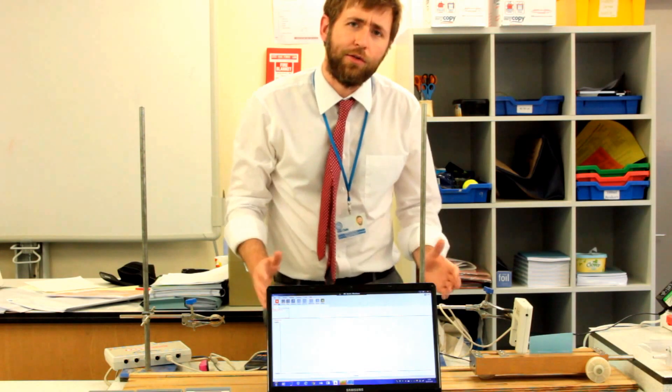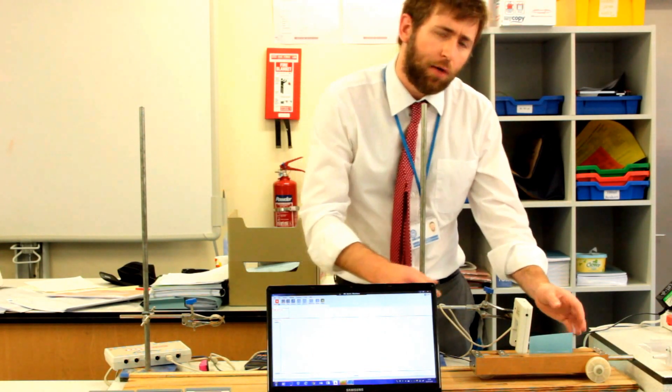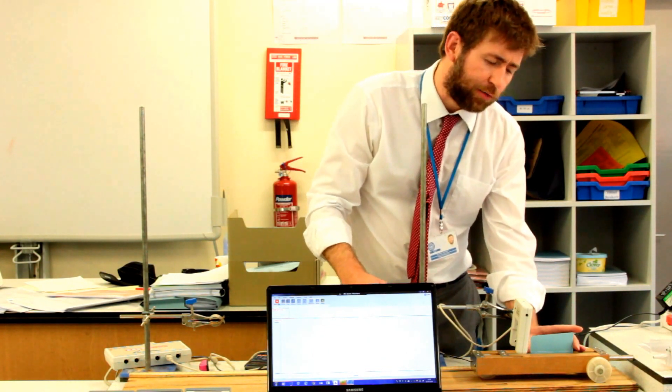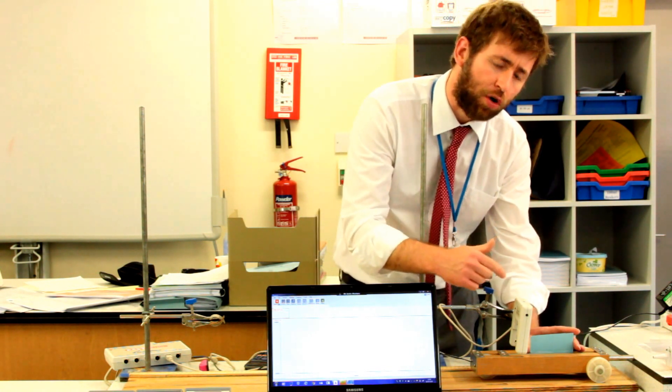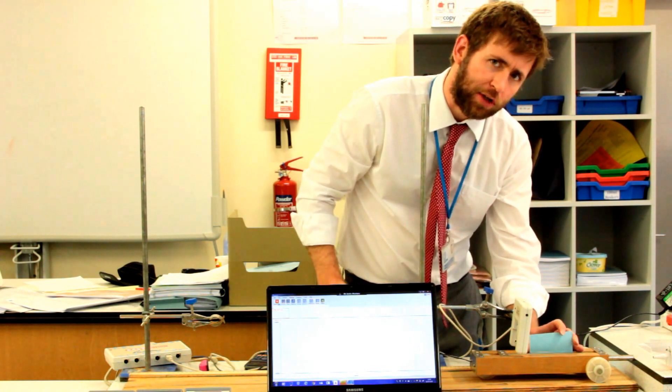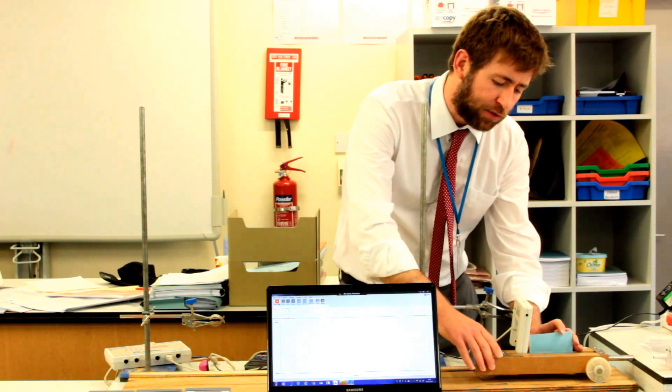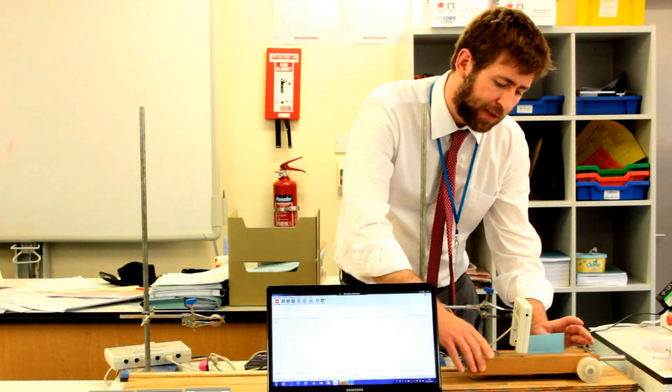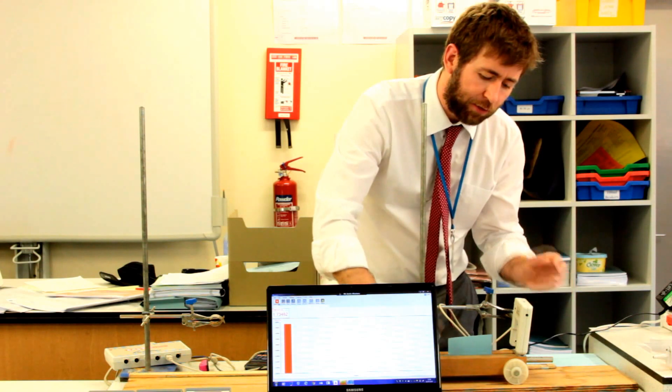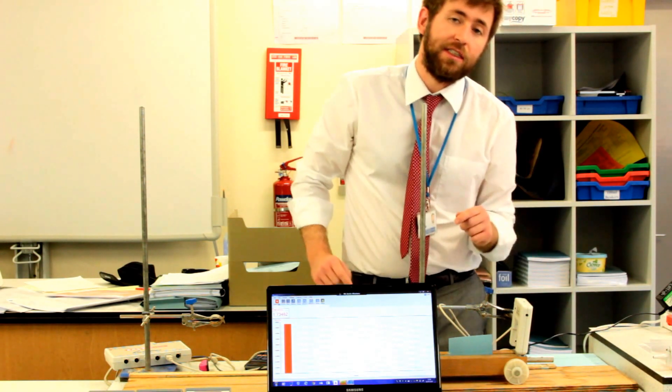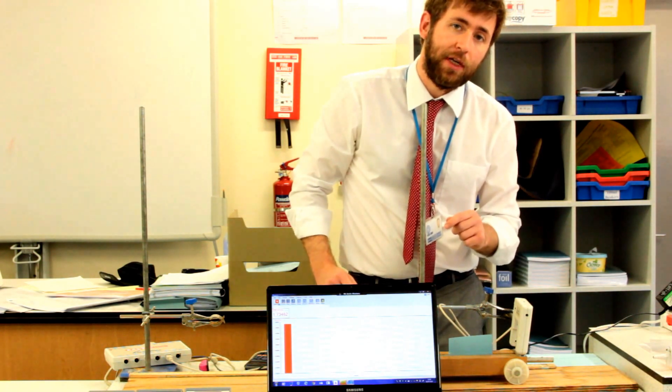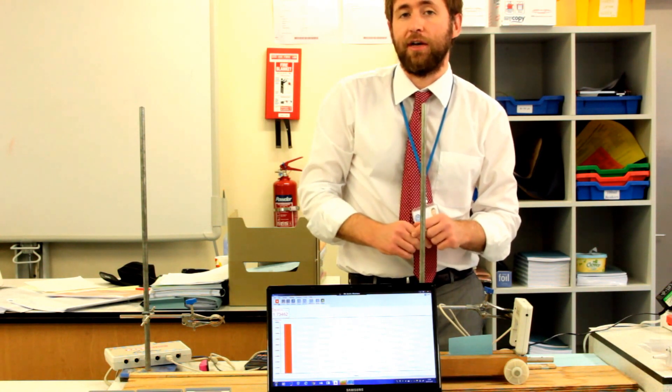But how are we going to do that? Well, as you can see, what I've done is I've put a card which is 10 centimeters long on top of the dynamics trolley. That is going to break the beam. As it breaks the beam, it will break it for a distance of 10 centimeters. So that is the distance we can use to calculate speed.